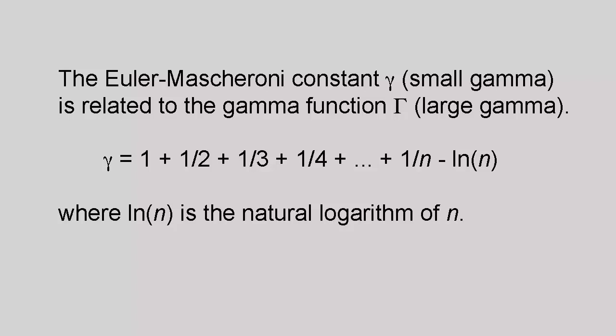The easiest way to define it is as the value towards which the following expression heads as n gets bigger and bigger. So we have gamma equal to one plus one over two plus one over three plus one over four and so on plus one over n minus the natural log of n.